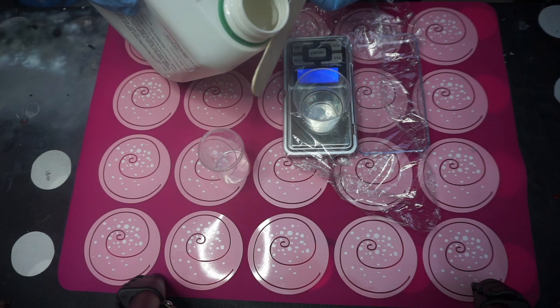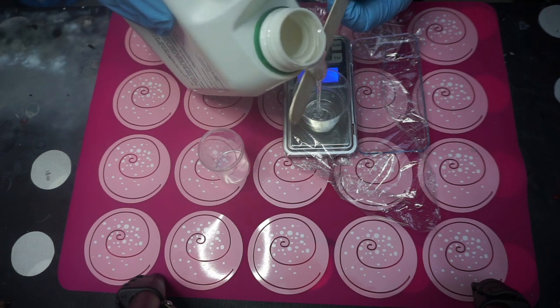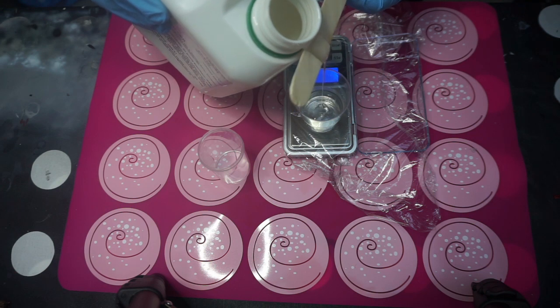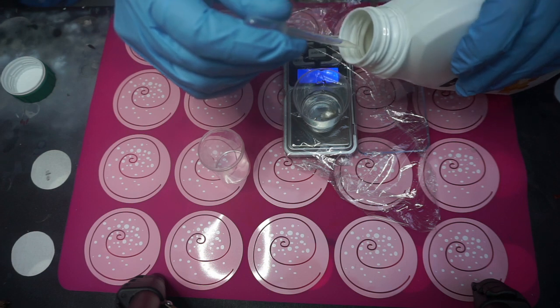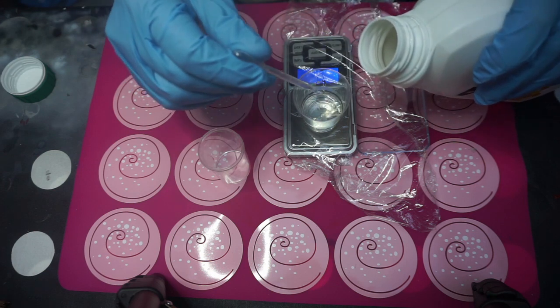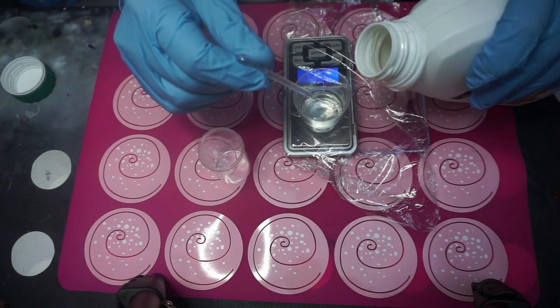A friend of mine started beekeeping earlier this spring, so on the basis of that I wanted to make something. And when I found a dead bee in my window, I thought that this could be a really cool bottle stopper. So the first thing you need to do is to mix up some resin to start with the base of the bottle stopper.